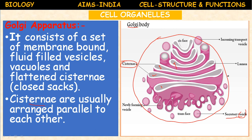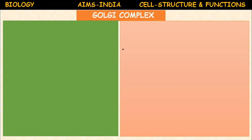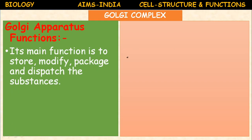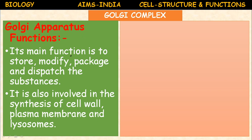There is a gap present between the cisternae called a lumen — the space. The main function of the Golgi apparatus is to store, modify, package, and dispatch substances like proteins.